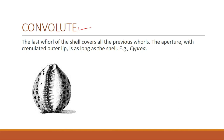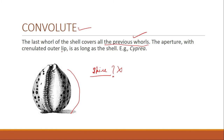The next shell form is convolute. In convolute, the last whorl of the shell covers all the previous whorls — you cannot identify where the spire is because the body whorl has covered the previous whorls. The aperture has a crenulated (irregular or wavy) outer lip, and the aperture is as long as the shell. The example is Cyprea.